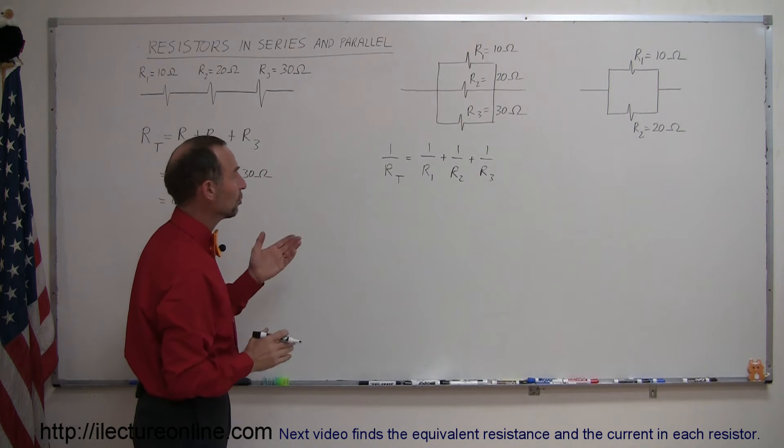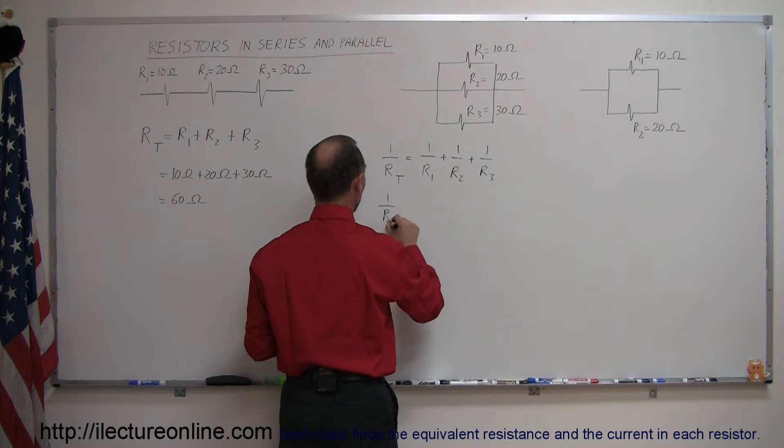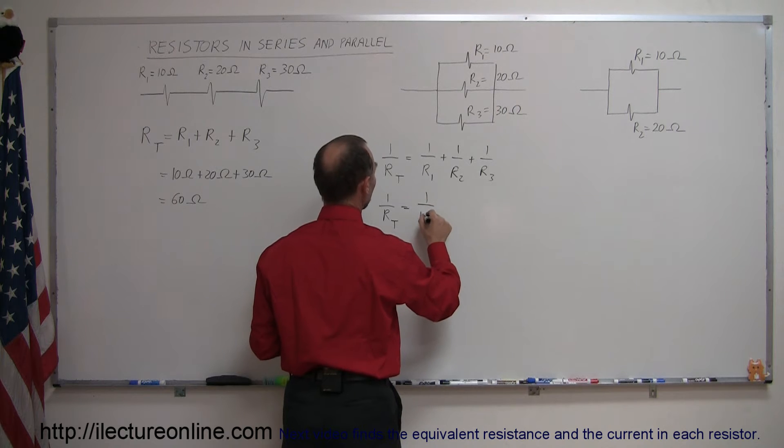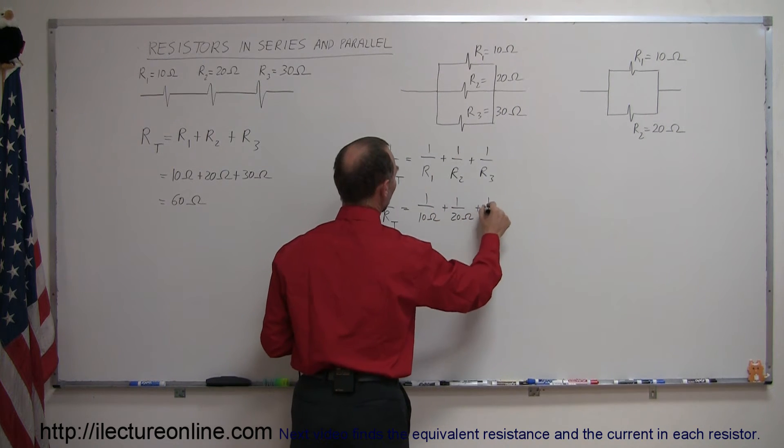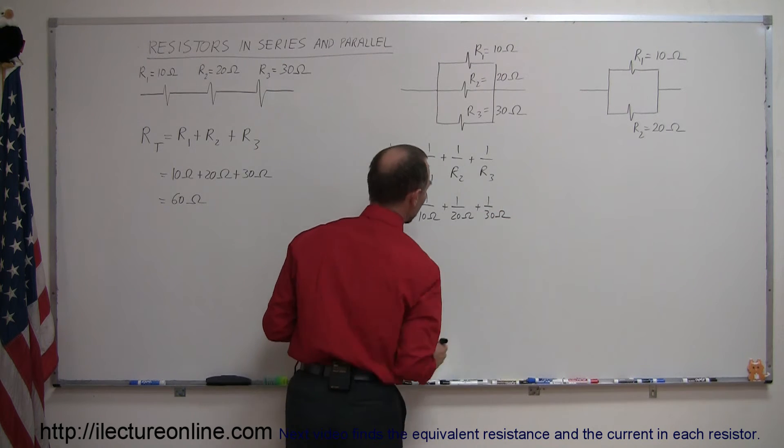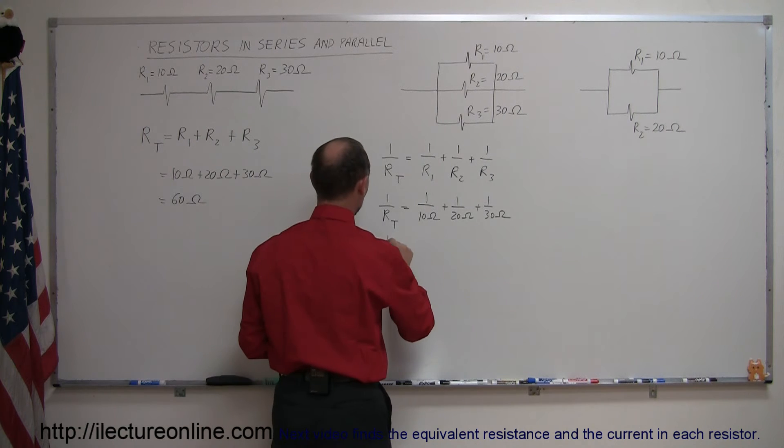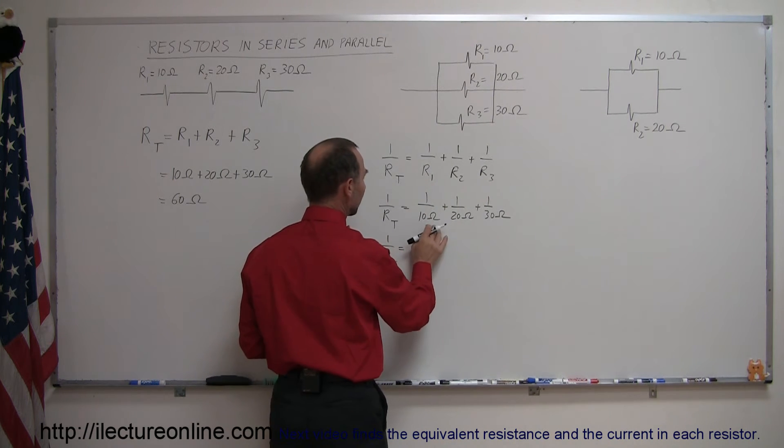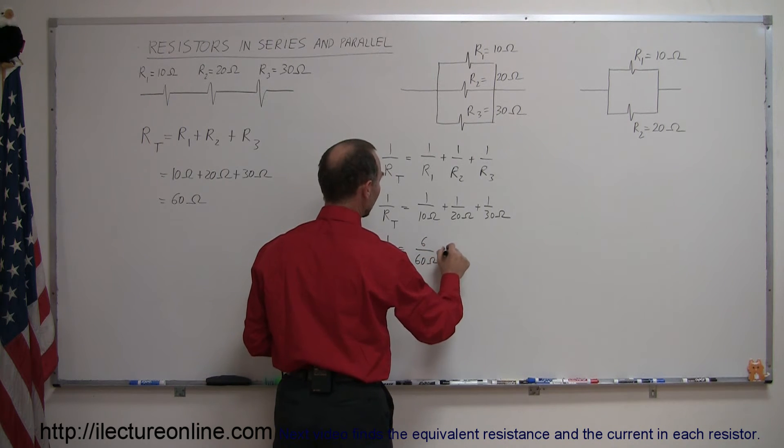So what you do is you take the inverse of each resistance and you sum them up, so this would be 1 over 10 ohms plus 1 over 20 ohms plus 1 over 30 ohms. You can see that the common denominator here is 60 ohms, so we can say that 1 over R total is equal to, we multiply both the numerator and denominator by 6, so this is 6 over 60 ohms.